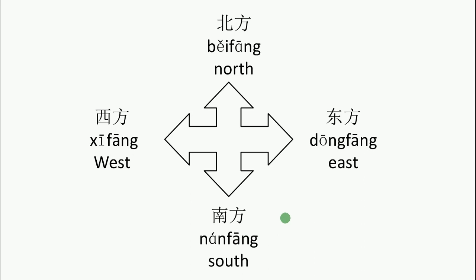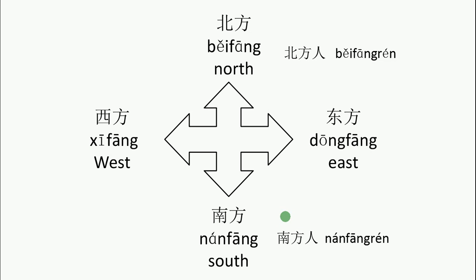So we have 北方人, which means the people from the north part of a region or country. For example, 北京人是北方人。 南方人 means the people from the south part of a country or region. So 我是南方人。